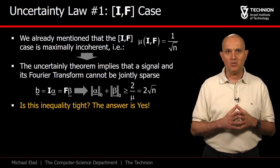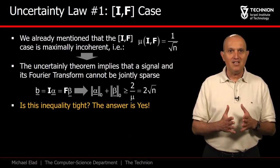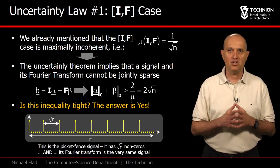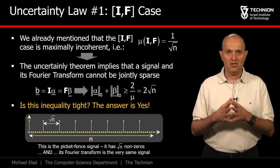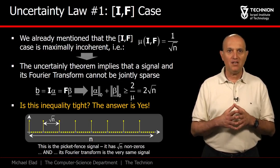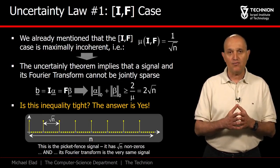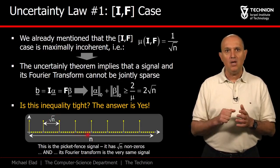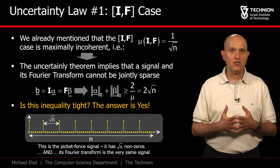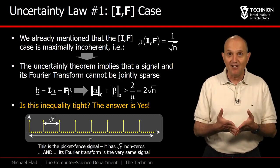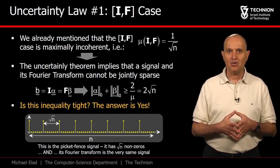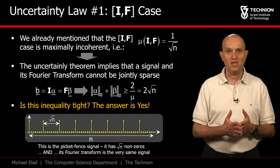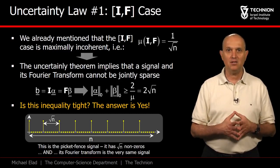An interesting question is whether this condition is tight. That is to say, is there a signal for which this rule applies with equality? The answer is positive. Assume that √n is an integer. The well-known picket fence signal is periodic with period length of √n. Each period starts with 1, followed by zeros. Relying on the Poisson summation formula, the Fourier transform of this signal is itself. Thus, we have found a signal containing exactly √n non-zeros, and the same holds true for its Fourier transform, giving an equality in the uncertainty rule.